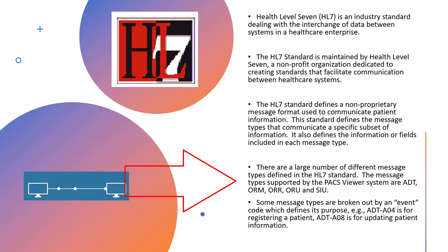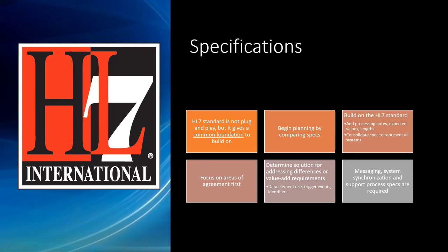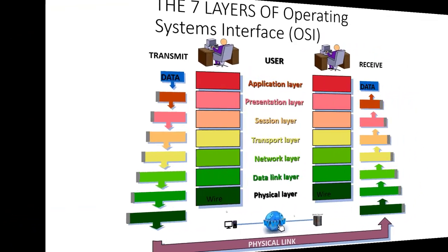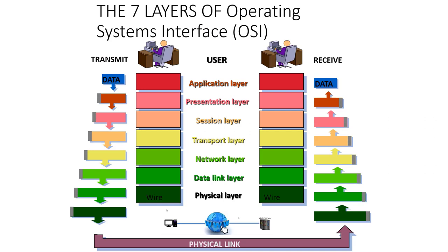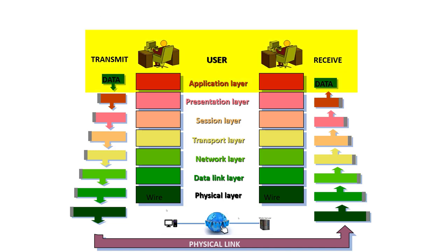The HL7 standard has many specifications. System synchronization and support process specs are required. We'll now look at some of the principles of informatics, starting with the operating systems interface. This is a concept of how operating systems should be interfaced and is used worldwide for all computer systems. We start with how we are connecting our systems physically — it can be by wire, cable, or some other methodology of connecting to the network. At level seven, which is the top layer, we're looking at the application layer. This is how we transmit and receive data.